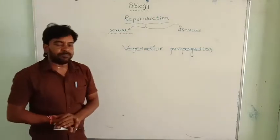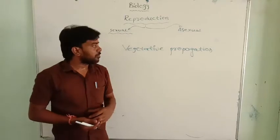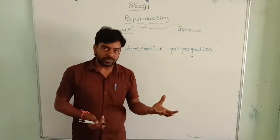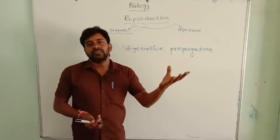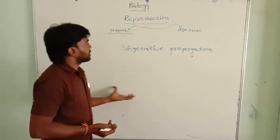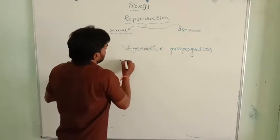By this vegetative propagation means by the vegetative parts. You know very well flower is the sexual part of the flower, but other parts like stems, roots, and leaves and other parts are vegetative parts. Here first one, by the leaves.